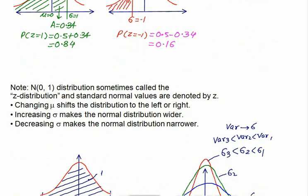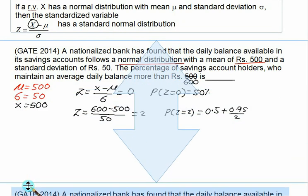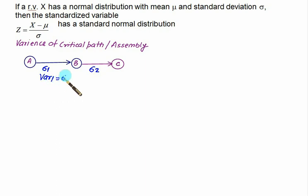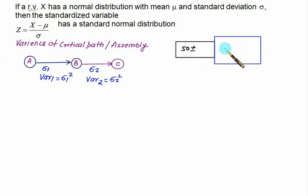Recall something in the part CPM. We used to calculate the variance along a critical path. Variance of a critical path or assembly - let's say we have A to B to C as a critical path. If these two paths have sigma 1 and sigma 2 as standard deviations, and you want to calculate the variance for this critical path, then the variance of the first part will be sigma 1 square and the variance of the second part is sigma 2 square.